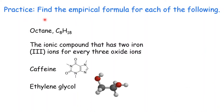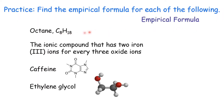Let's work on another practice: find the empirical formula for each of the following. Octane — that's one of the major ingredients in gasoline, and its formula is C8H18. We divide everything by two, giving C4H9. Since 4 and 9 are already in the smallest whole number ratio, C4H9 is the empirical formula for octane, while C8H18 is the molecular formula.